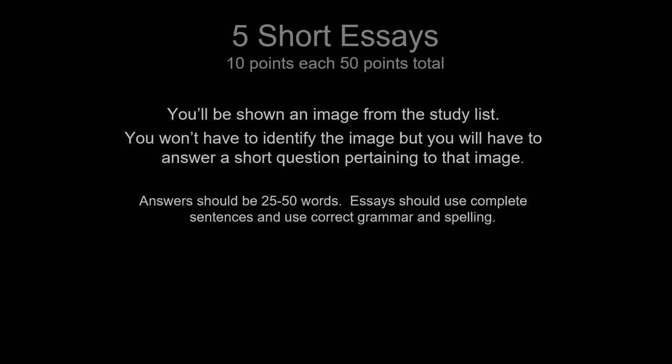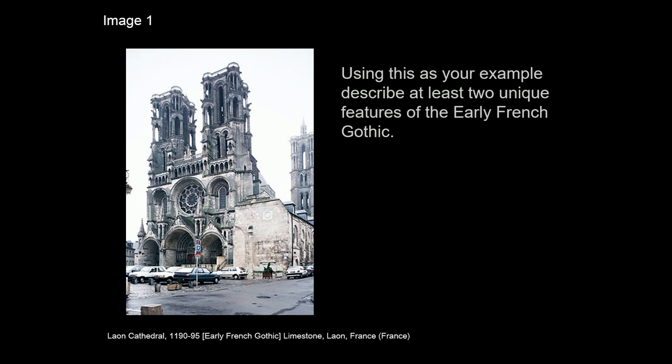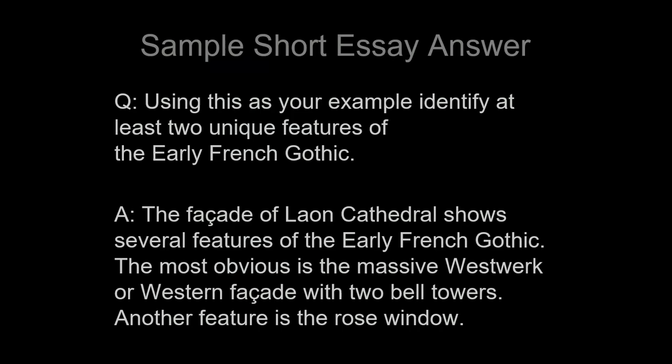Here's how the five short essays work. I'll show you an image from the study list and you'll have to answer in something approximating 50 words — these are really short. For example, I might show something like Leon Cathedral and say, using this as your example, identify and describe at least two unique features of the early French Gothic. You could say the rose window, the west work towers, the tracery, the pointed arches — there's a whole number of things, but I'm only asking you to do two.